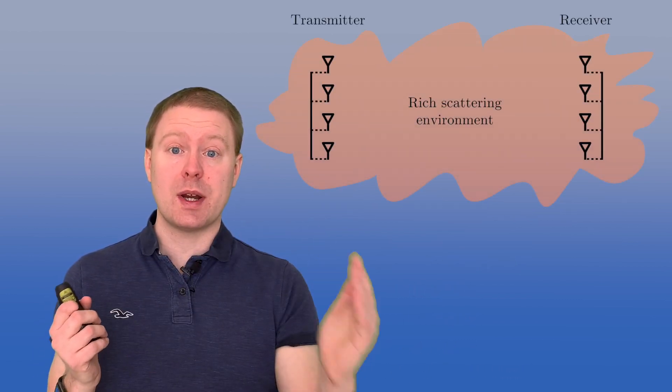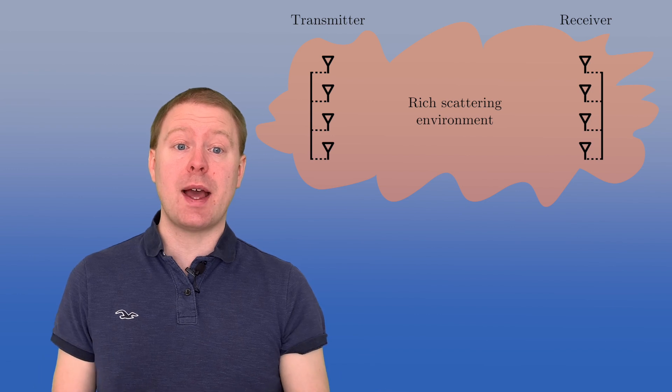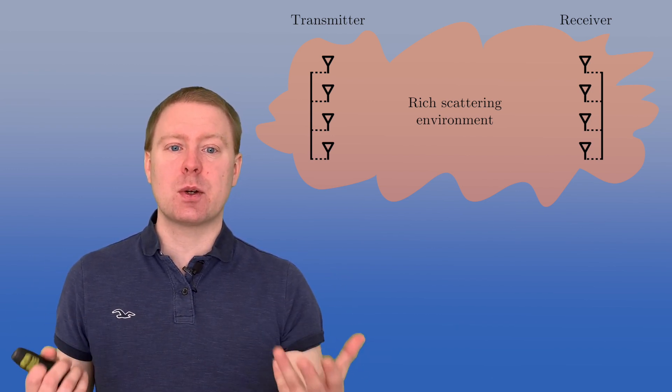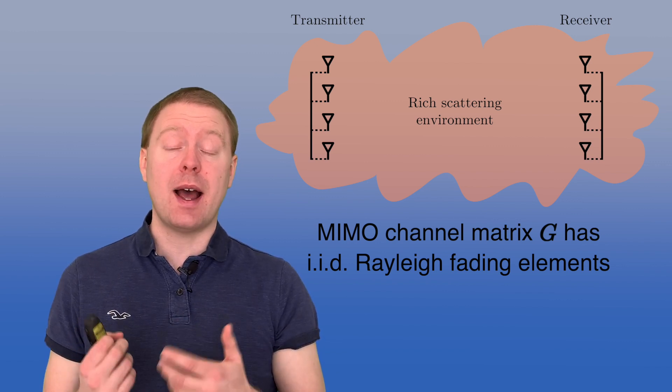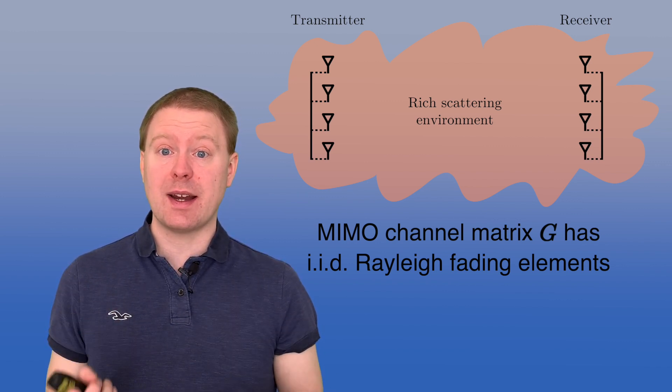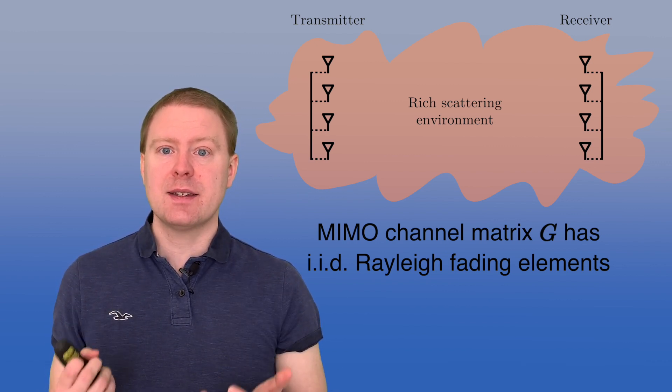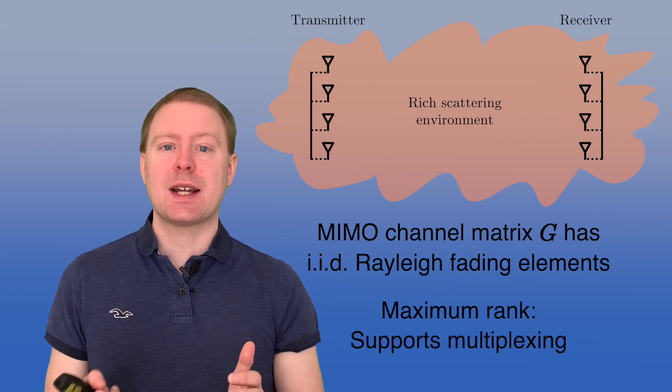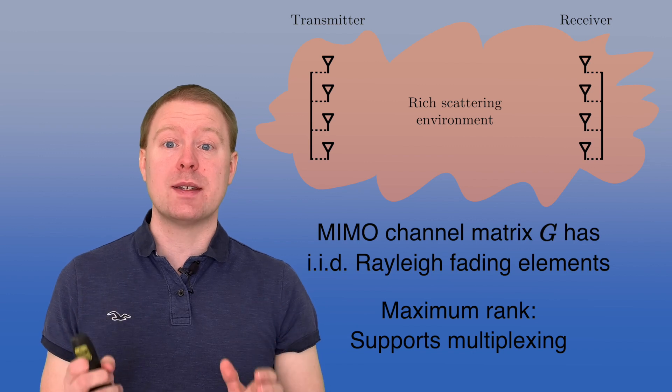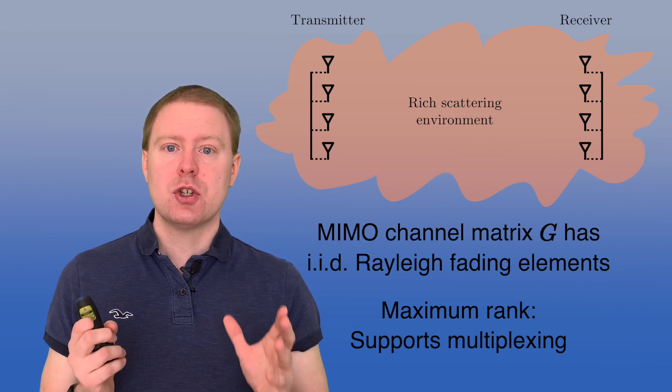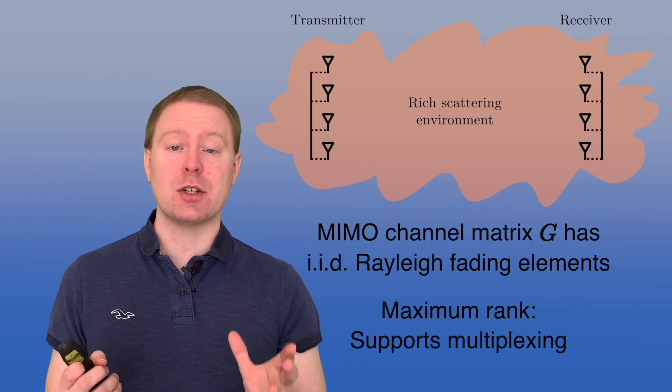And if we have uniform linear arrays at both the transmitter and the receiver, and this type of rich scattering around them, well then G will have elements that are independent and identically distributed in the same way. And when we do something like that, the channel matrix will have the maximum rank of minimum number of transmitter and receiver antennas with very high probability. So in those cases, we can actually make use of this multiplexing gain a lot.